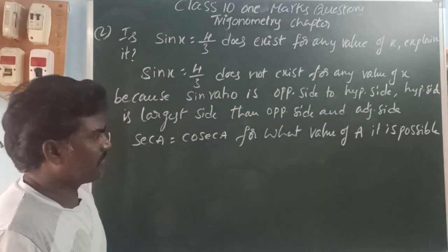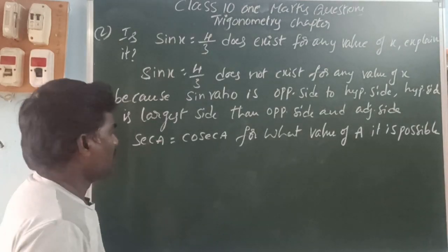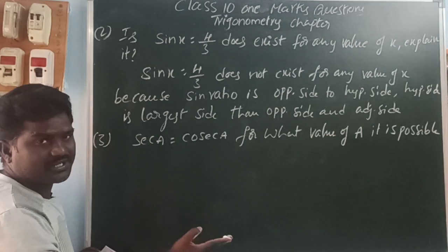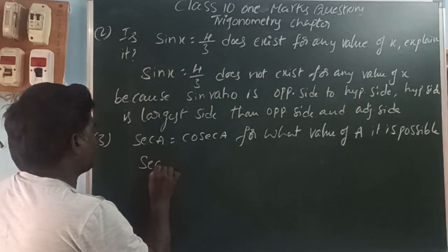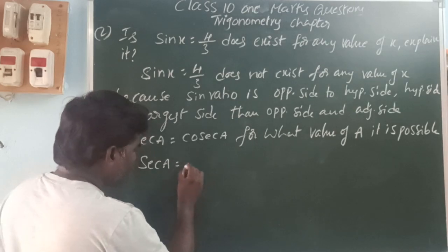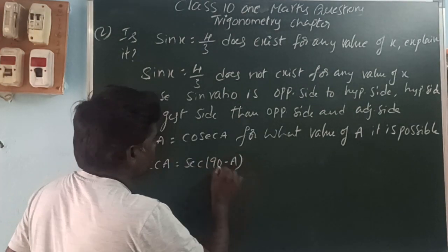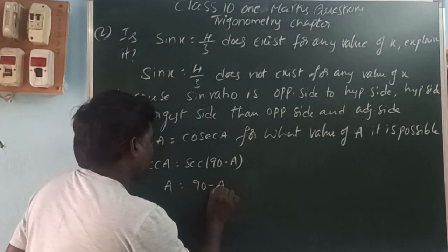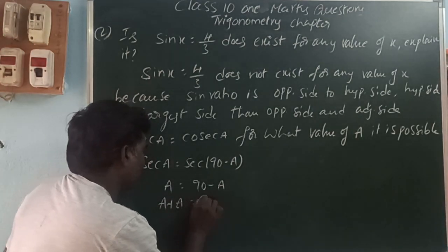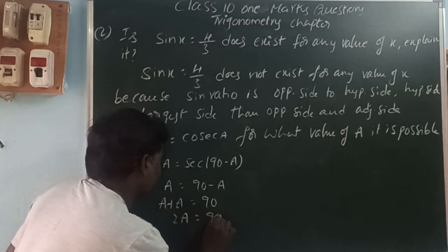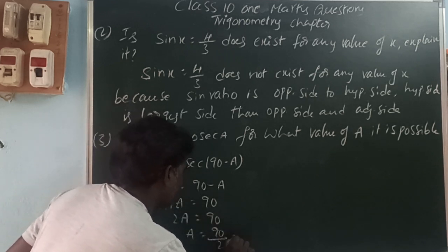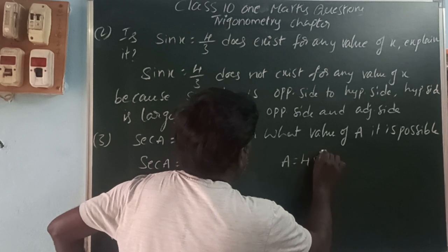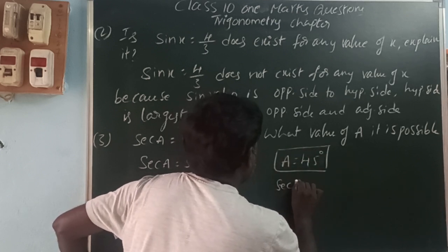Next: sec A equals sec A — for what value of A is this possible? Using complementary angles, sec A can be written as sec of 90 minus A when changing through complementary angles. So both sides being equal means A equals 90 minus A. Therefore A plus A equals 90, so 2A equals 90, and A equals 45 degrees. At angle 45 degrees, sec A equals sec A.